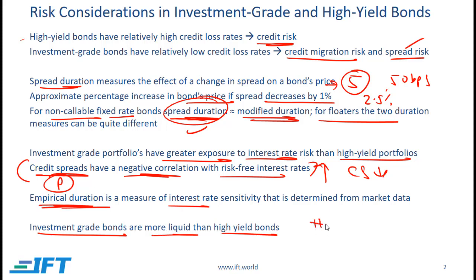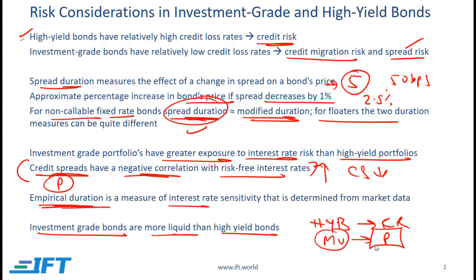Investment grade bonds are more liquid than high yield bonds, implying their riskiness is less. With high yield bonds, a major issue is credit risk and relatively high default rates, so we are concerned with the market value of a high yield bond portfolio. For this reason, high yield bonds are quoted in terms of price, while investment grade bonds are generally quoted in terms of spread over a government rate.